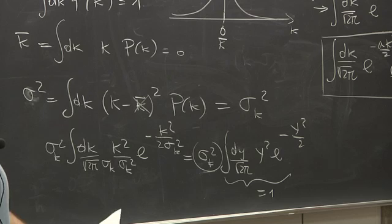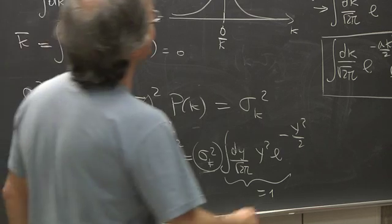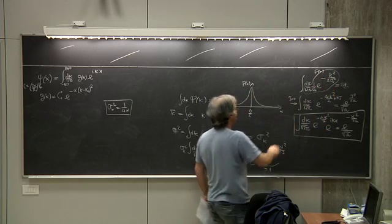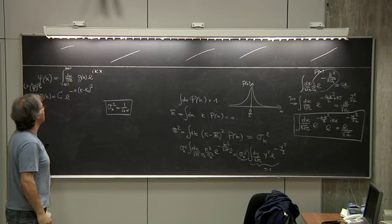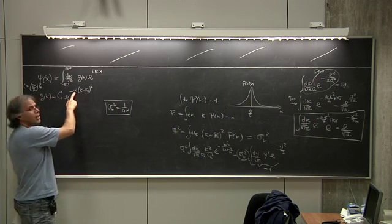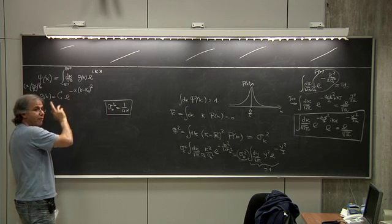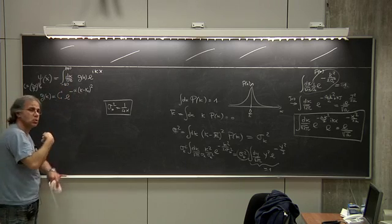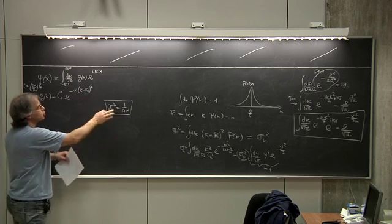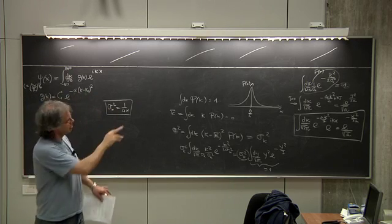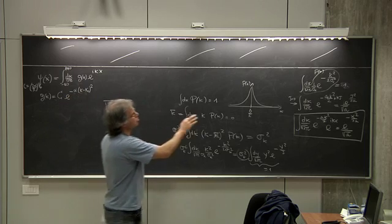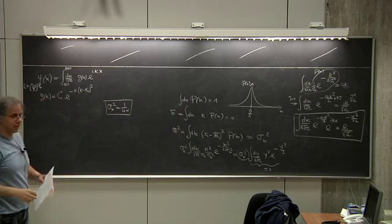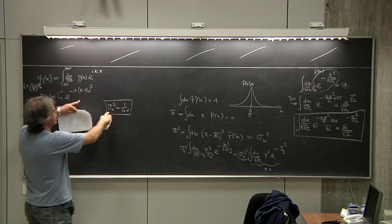The width defined in this standard way — the second moment — is just sigma k squared, the parameter appearing in the Gaussian. This is no surprise: when you write sigma in the denominator this way, it is exactly the variance, the second moment. This is slightly more physical than writing it with alpha, because you always have to remember that alpha is not the width, but the inverse of the square of the width, with some factors too.